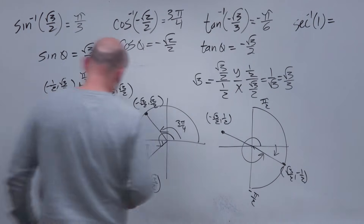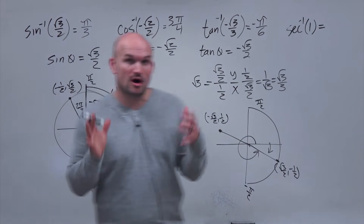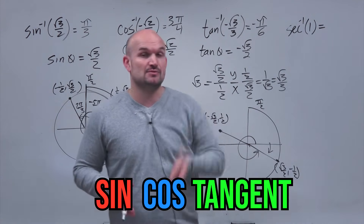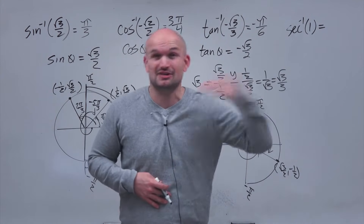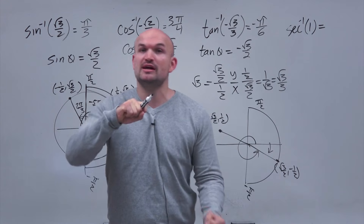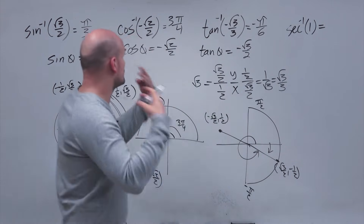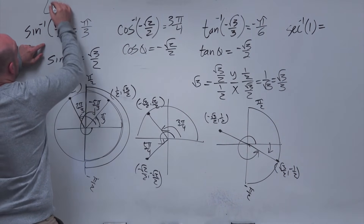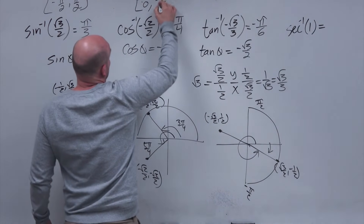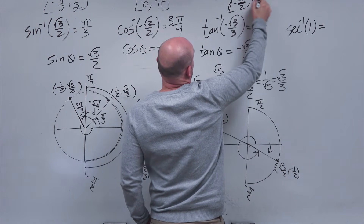We have these restrictions so that our function is going to be one-to-one. Without restrictions, sine, cosine, and tangent repeat — they fail the horizontal line test and are not one-to-one functions. So we restrict the domain of our trigonometric functions so the inverse is invertible. The restrictions are: sine from negative pi halves to pi halves, cosine from zero to pi, and tangent from negative pi halves to pi halves.